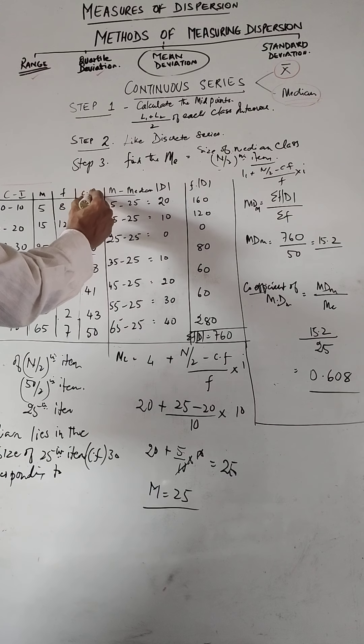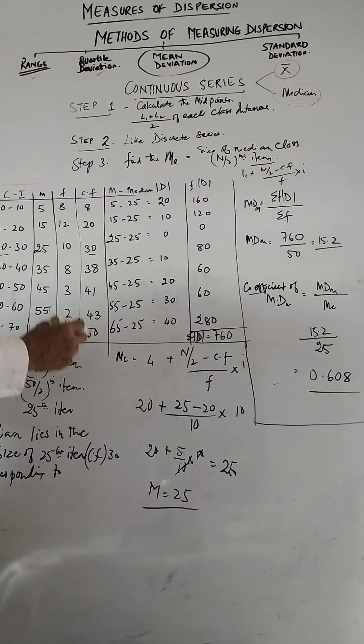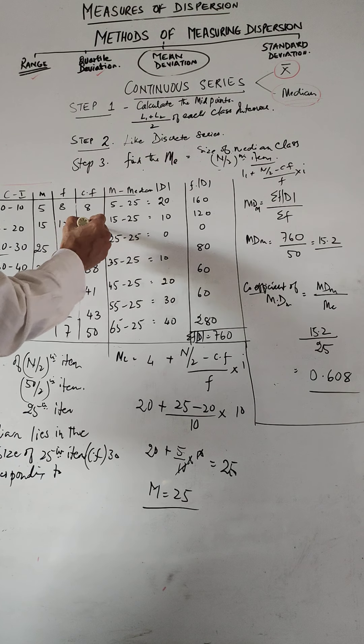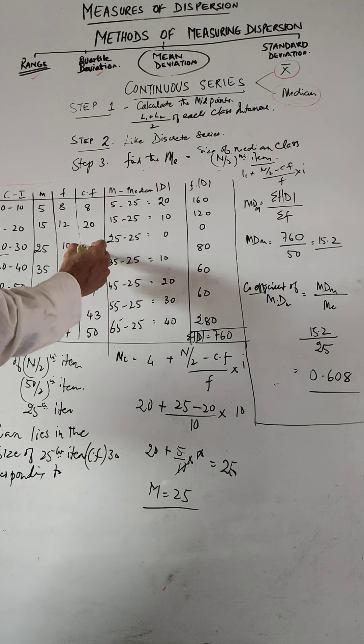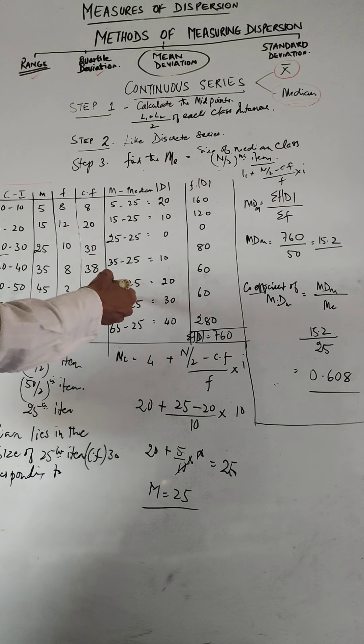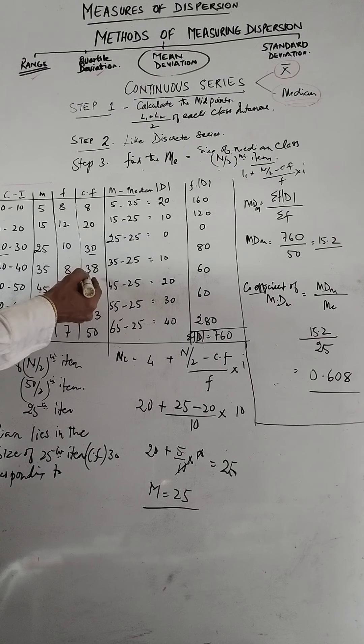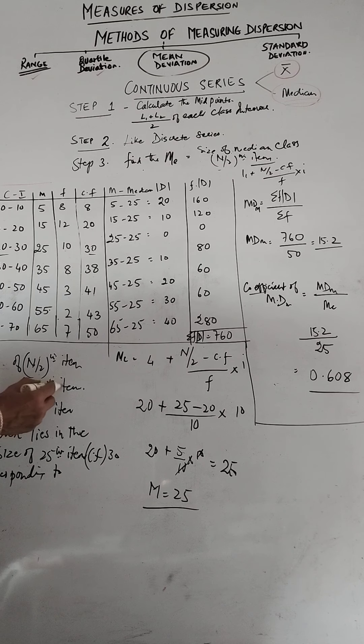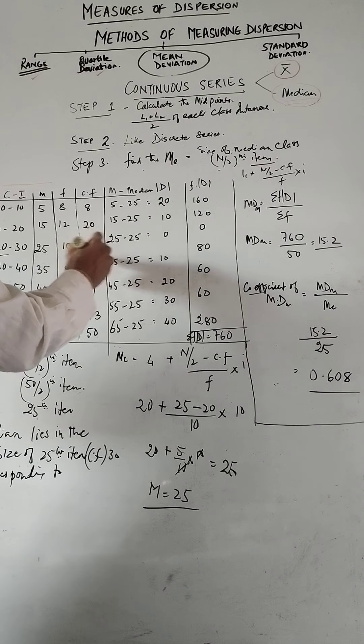Now what we must do here is you have to find out the cumulative frequencies. So 8 plus 12 is 20, 20 plus 10 is 30, 30 and 8. We keep accumulating the frequencies: 38, 38 plus 3 is 41, 41 plus 2 is 43, 43 plus 7 is 50. So now where does median lie? Size of N by 2th item, that is 50 divided by 2th item is the 25th item. So where does the 25th item lie? Here.